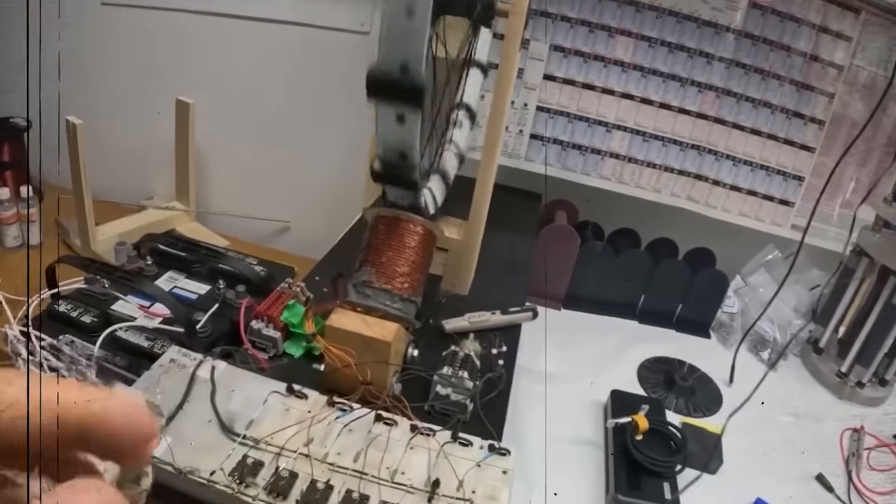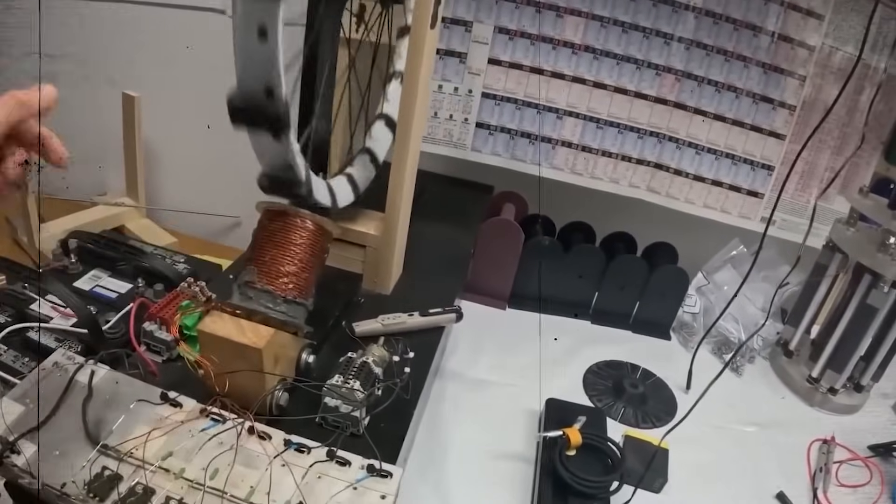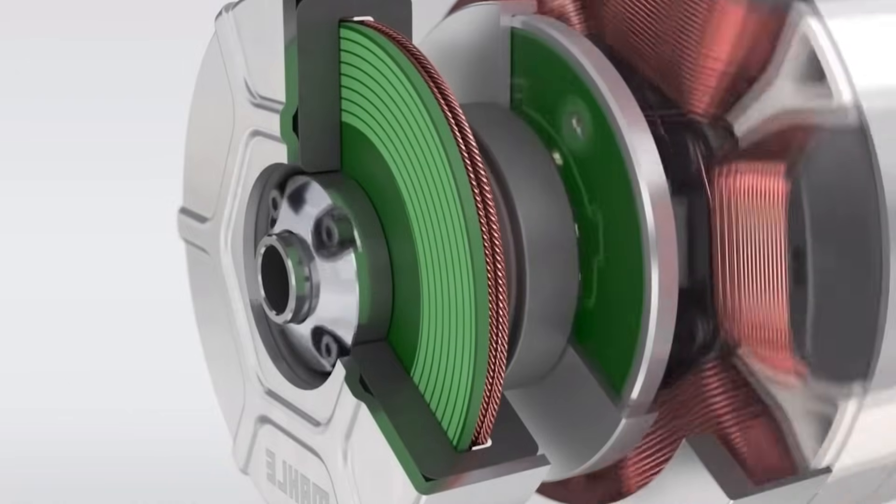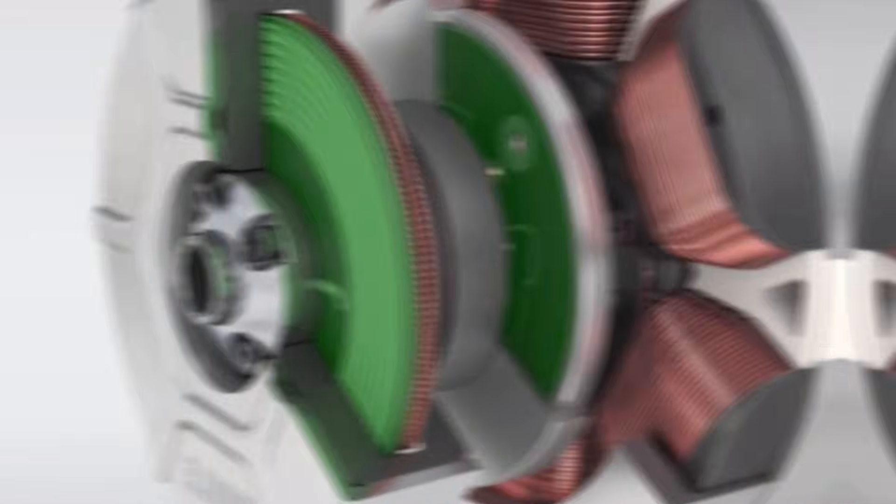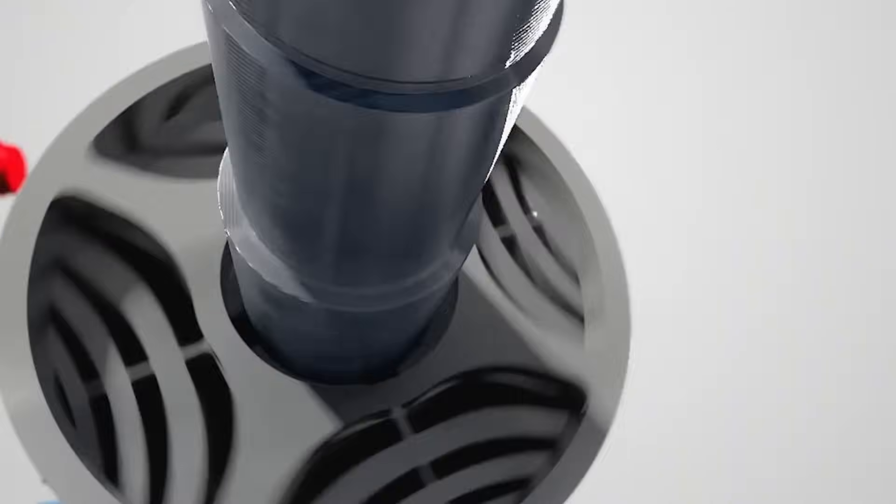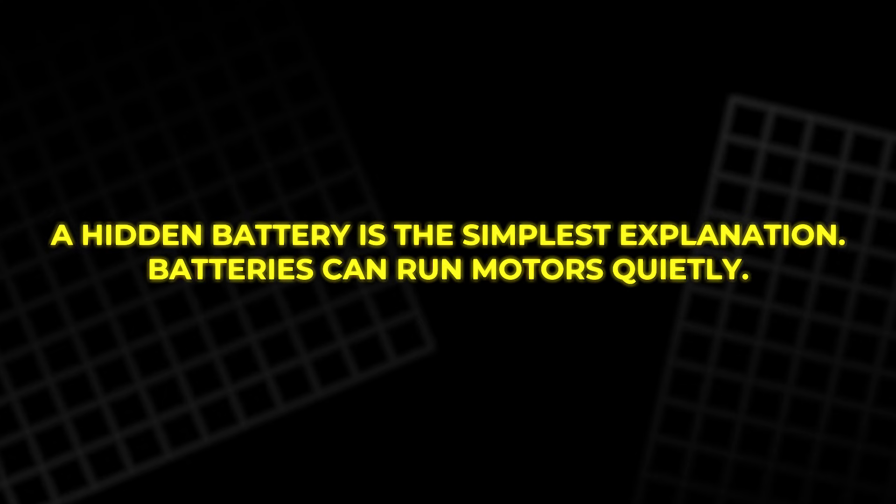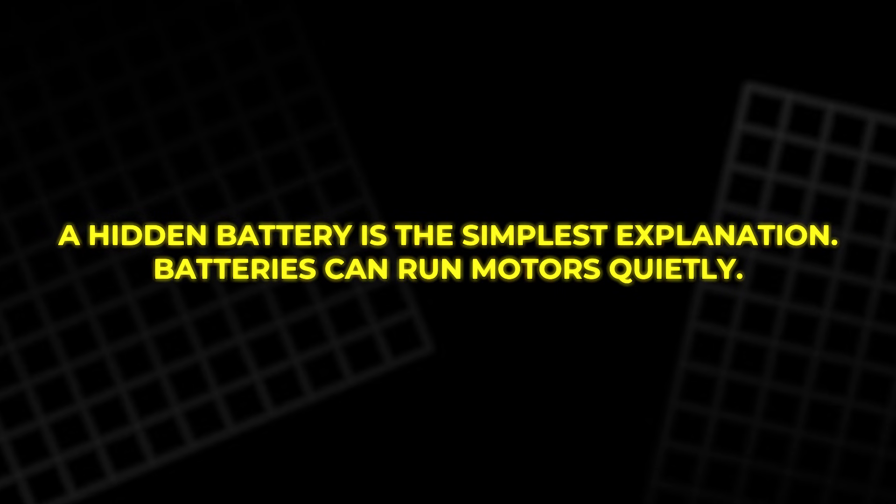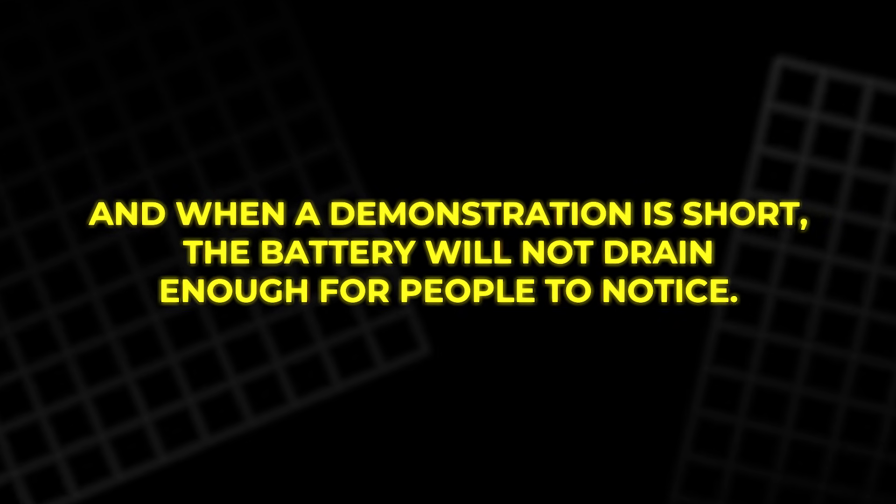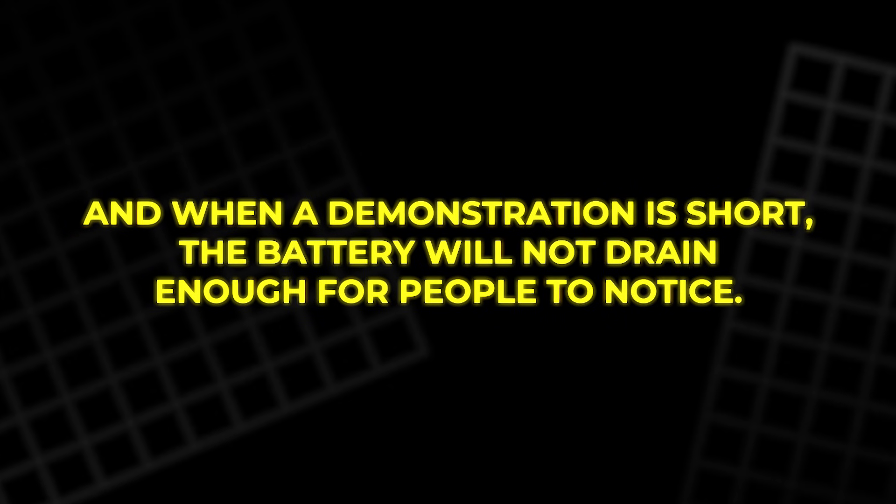A real self-accelerating machine should constantly increase in pitch as it speeds up. But the pitch stayed almost the same after the initial start. That means the machine reached a steady speed instead of speeding up endlessly. Without continuous acceleration, it cannot be the device that the inventor claimed. A hidden battery is the simplest explanation. Batteries can run motors quietly. And when a demonstration is short, the battery will not drain enough for people to notice.